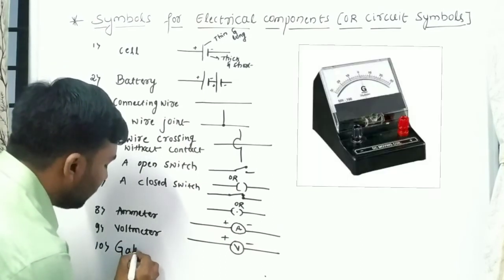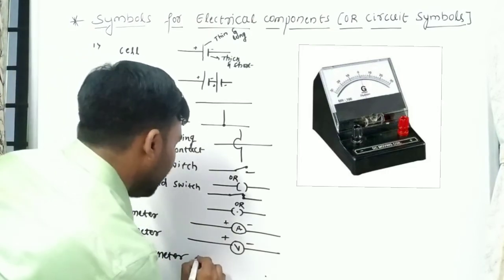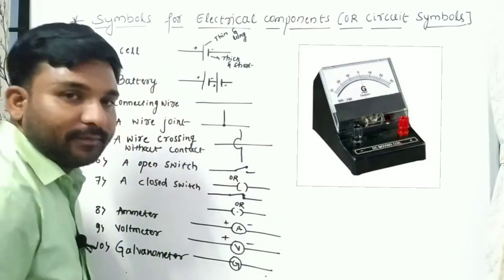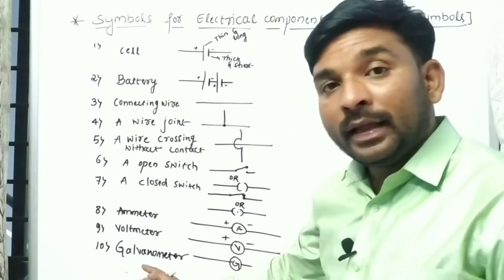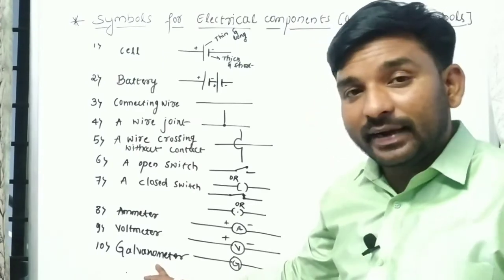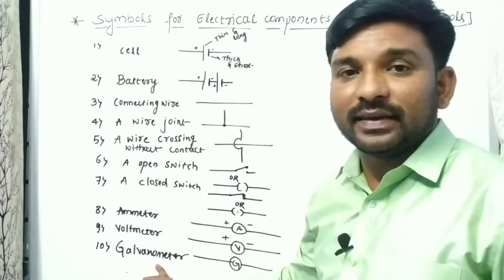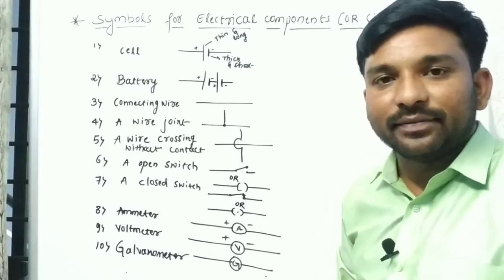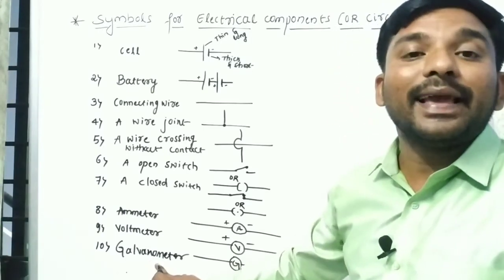Next is the galvanometer. The galvanometer symbol is a circle with the letter G inside. It is the device which detects the presence of electric current in the circuit — whether current is there or not in the circuit is detected using the galvanometer.